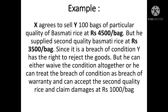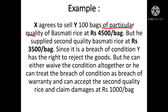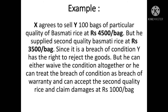Example: X और Y हैं। Y जो है वो X से सबसे high quality वाला बासमती rice खरीदना चाहता है - 100 bags, 4500 rupees per bag। X मान जाता है। लेकिन X second quality का बासमती rice 3500 per bag supply करता है। यहाँ condition breach हो रही है क्योंकि Y को specific premium quality चाहिए थी। Since it is a breach of condition, Y has the right to reject the goods।